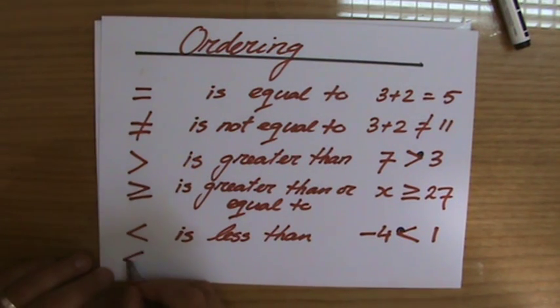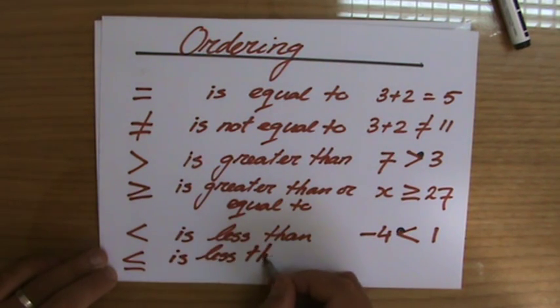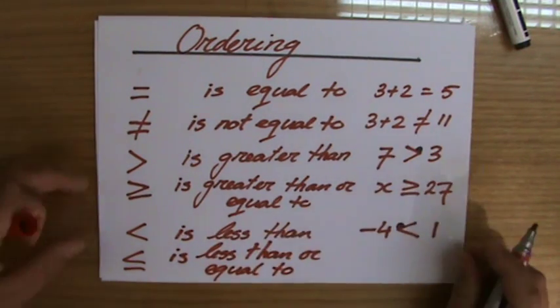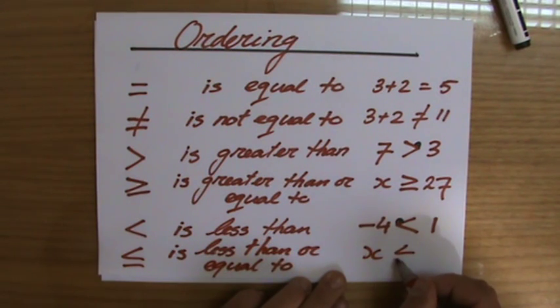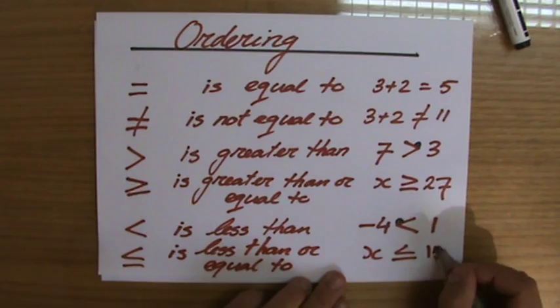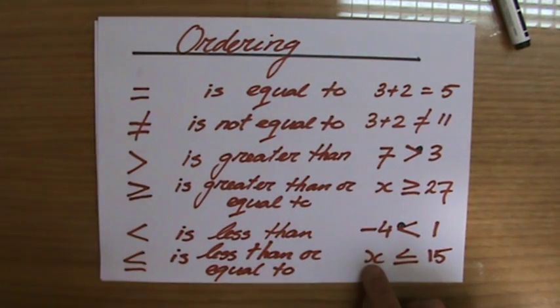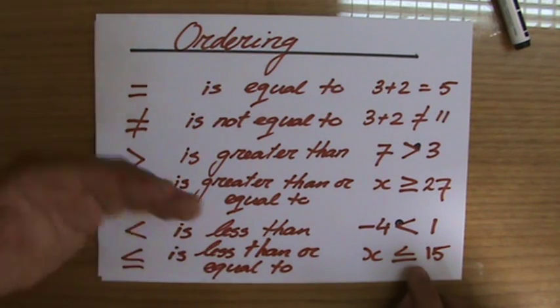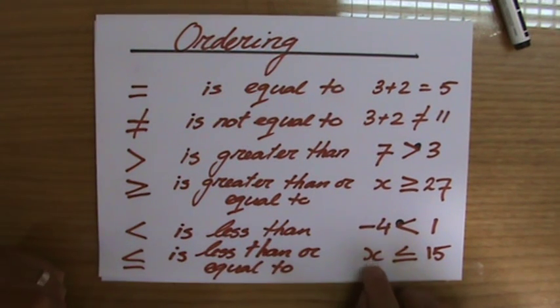And the last symbol: is less than or equal to. X is less than or equal to 15. So for instance, the amount of students x who will participate in the field trip is less than or equal to 15. So the maximum amount of students will be 15 but perhaps some of them are sick so we'll have less than 15. So x, the amount of students for instance, is less or equal to 15.